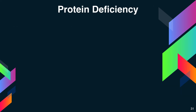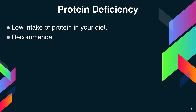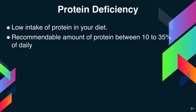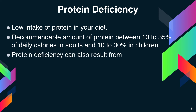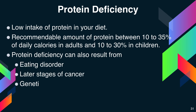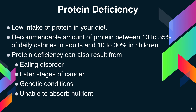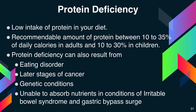Protein deficiency results from low intake of protein in your diet. The recommended amount of protein is between 10–35% of your daily calorie intake for adults, and between 10–30% for children. Protein deficiency can also result from other conditions, such as eating disorders, later stages of cancer, genetic conditions, and conditions when your body is unable to absorb nutrients, such as irritable bowel syndrome or gastric bypass surgery.